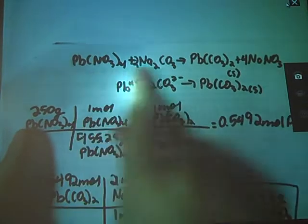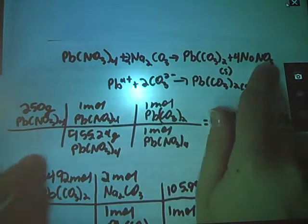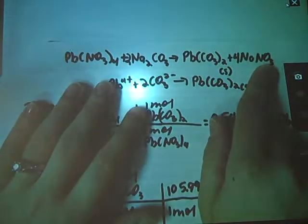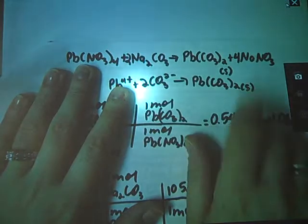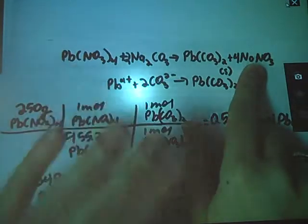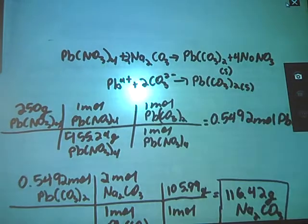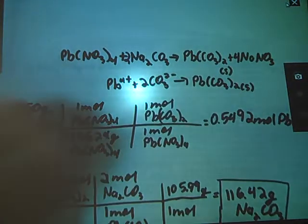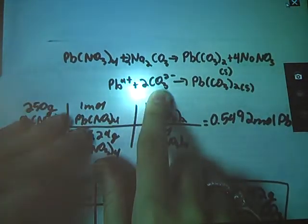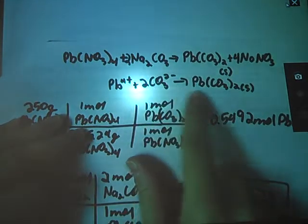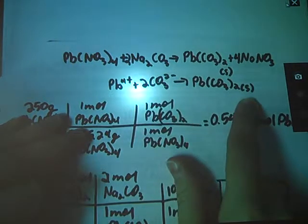There's two ways that you can do this. The beauty of stoic is that once you have a balanced chemical equation like this, you can relate any two chemicals in this equation. We can relate lead nitrate to sodium nitrate, we can relate sodium carbonate to lead carbonate. It really doesn't matter. But my lead is binding with my carbonate to make my lead carbonate solid. That's the solid we're producing here.